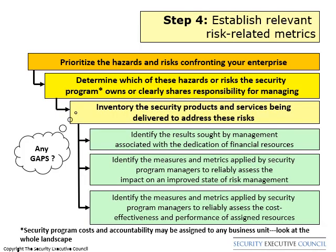Our fourth step: establish relevant risk-related metrics. Relevant metrics are clearly linked to something you want to accomplish that has a direct benefit to the business. We can approach this step in a couple of ways: one, establishing metrics that demonstrate our role in enterprise risk management, and two, establishing metrics that demonstrate our alignment with business strategy and objectives.